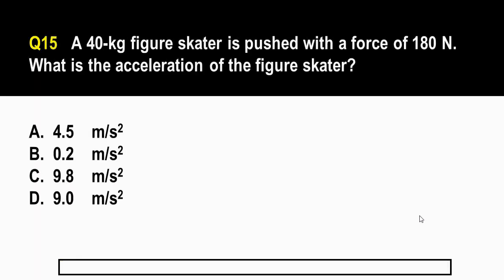And for our last question, this is question number 15. A 40 kilogram figure skater is pushed with a force of 180 newtons. What is the acceleration of the figure skater? A 4.5 meter per second squared. B 0.2 meters per second squared. Letter C 9.8 meters per second squared. And letter D 9.0 meters per second squared.